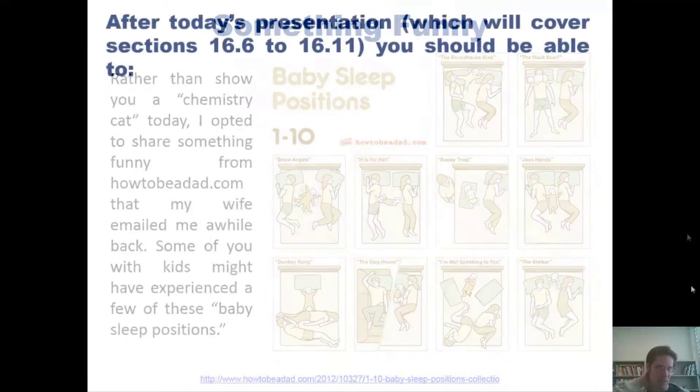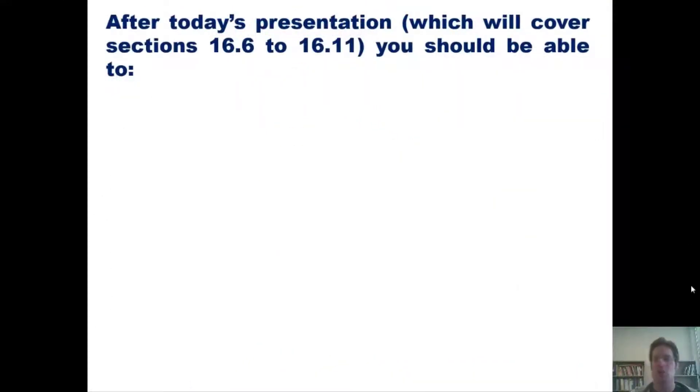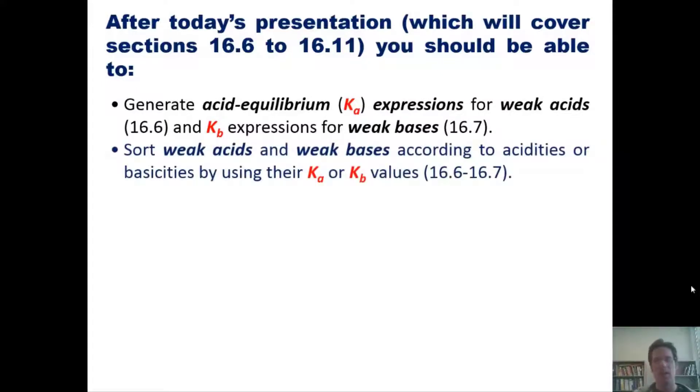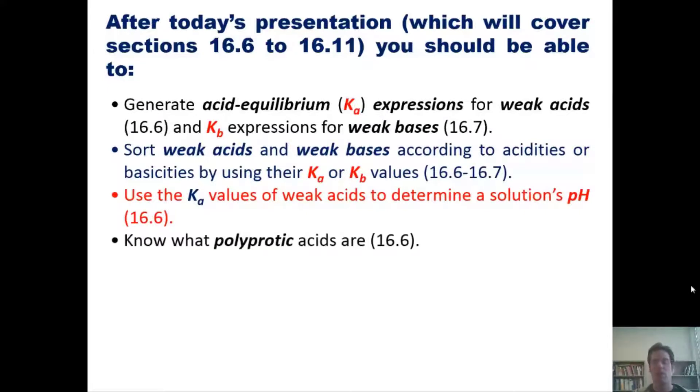Now after the next and final sets of lectures on chapter 16, you guys should be able to do the following. First, generate acid-base equilibrium or Ka expressions for weak acids and Kb expressions for weak bases. Second, sort weak acids and weak bases according to their acidities or basicities by using their Ka or Kb values. Third, use the Ka values of weak acids to determine a solution's pH. Fourth, know what polyprotic acids are. Fifth, perform interconversions using Ka and Kb.